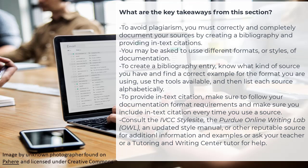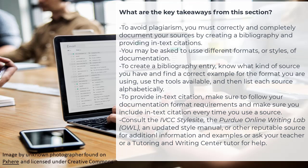To avoid plagiarism, you must correctly and completely document your sources by creating a bibliography and providing in-text citations. You may be asked to use different formats or styles of documentation — three common ones are MLA, APA, and Chicago style. Always make sure you know which one you are supposed to use. To create a bibliography entry: know what kind of source you have, find a correct example for the format you're using, use the tools available, and list each of the sources alphabetically.